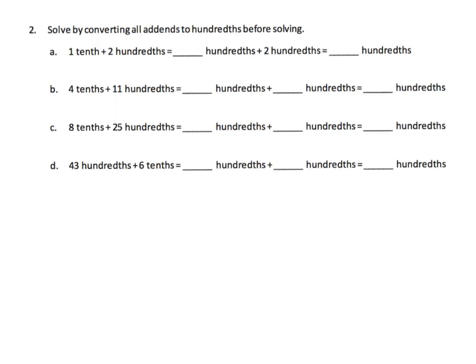Here we're using the equivalent fractions method in terms of units. For example, 4 tenths plus 11 hundredths — we want students to recognize that 4 tenths is 40 hundredths. Imagine four strips of the area model. So that ends up being 40 hundredths plus the original 11 hundredths, which gives us 51 hundredths.